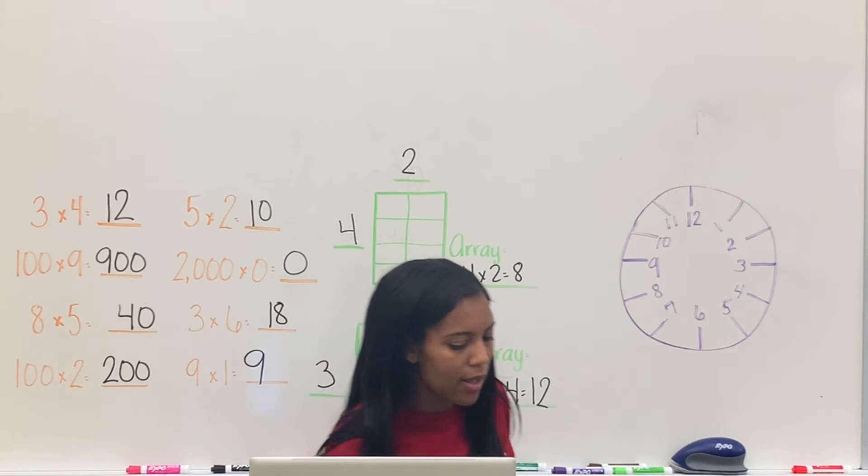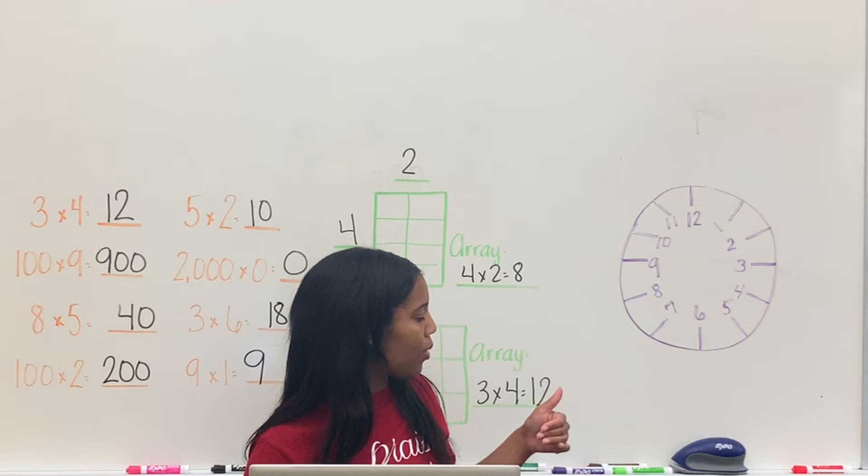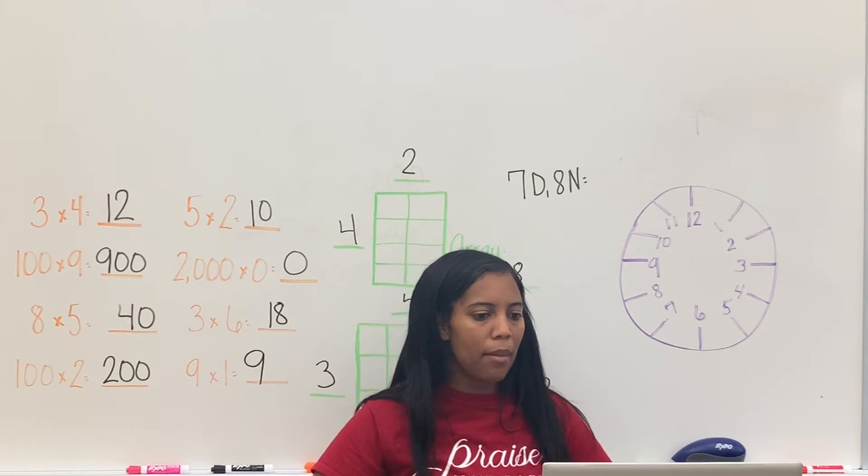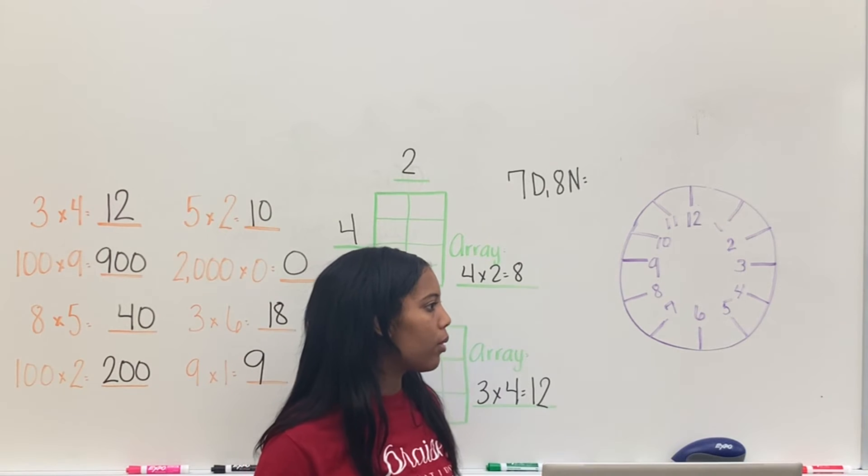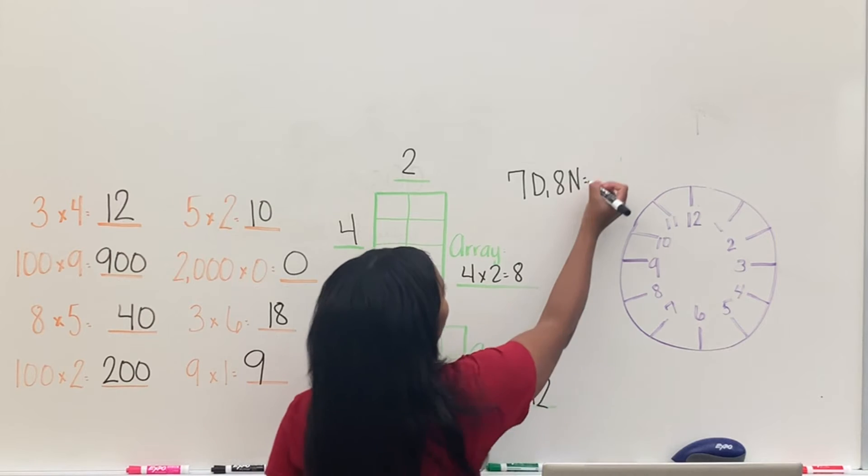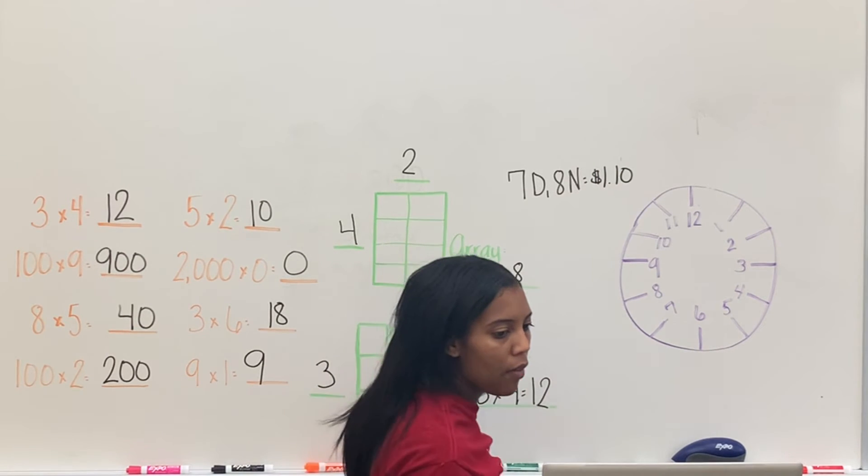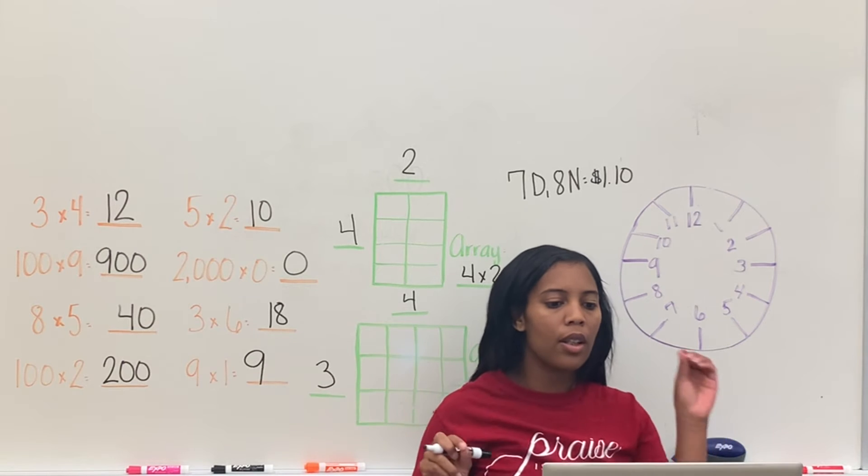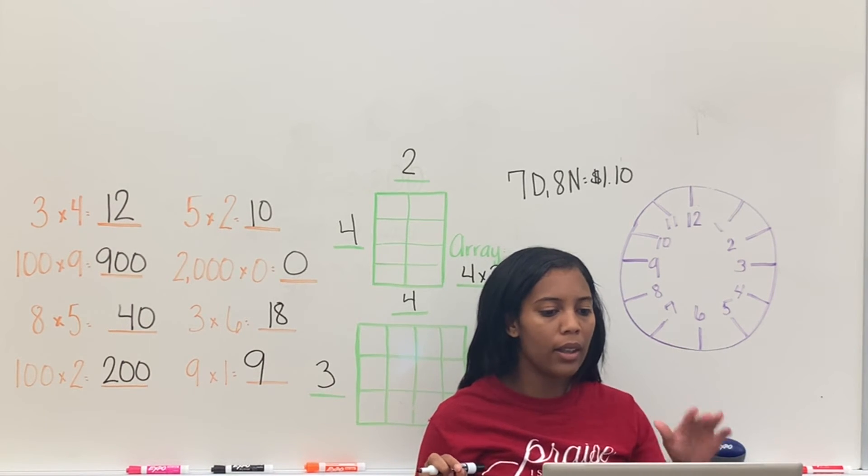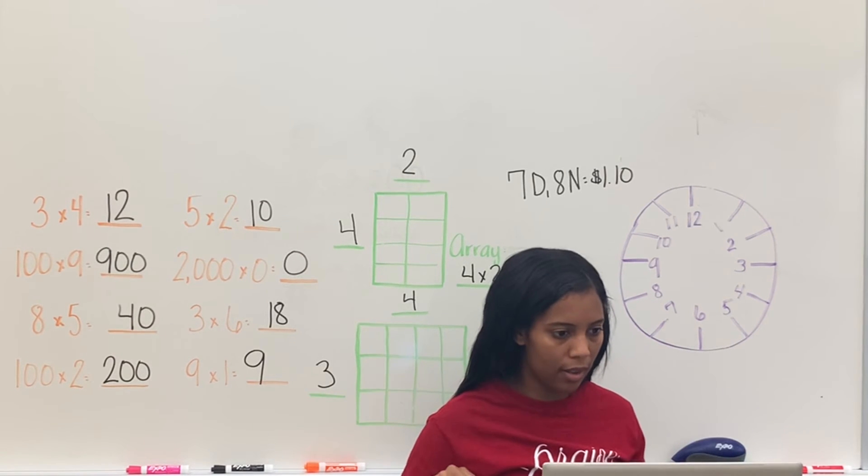Alright, so let's go ahead and practice some coins. So that's why you needed a little sleeve paper. We'll go ahead and go over some coins. 7 dimes, 8 nickels. Remember, a dime is 10 cents. A nickel is 5. $1.10. $1.10. So you have your 7 dimes worth 70. So then your 8 nickels. So 75, 80, 85, 90, 95, $1.00, $1.05, $1.10.